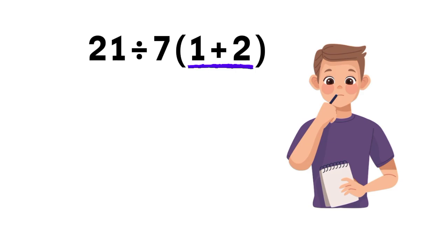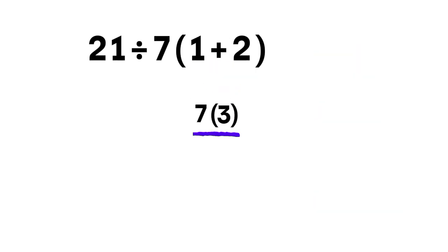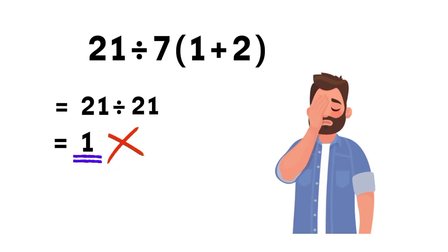You might think 1 plus 2 gives us 3. 7 times 3 is 21, and 21 divided by 21 should equal 1. But that answer is not correct.